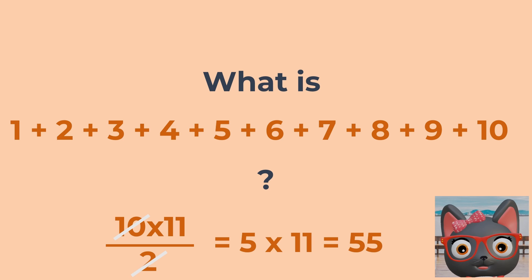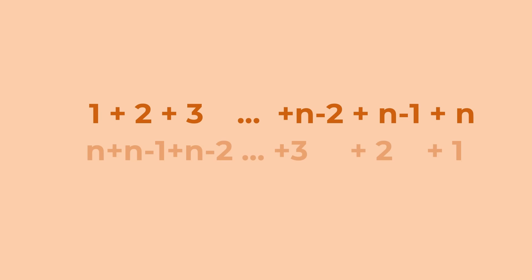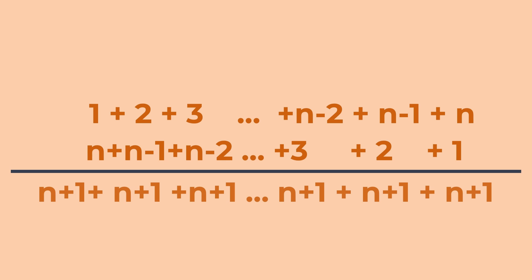Okay, now, what if I ask you what's 1 plus 2 plus all the way to plus n minus 1 plus n? Well, let's do it the same way as before. Let's sum this up twice and place the second sequence in opposite order.